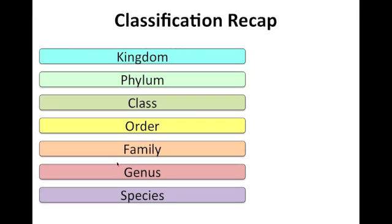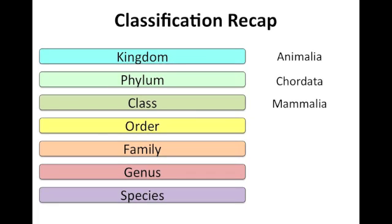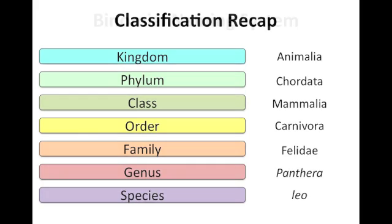Let's exemplify this classification system using an example. In this example, the organism is an animal, it has a backbone, it belongs to the mammal group, it's a carnivore, it's a type of cat, it belongs to a group of cats in the Panthera genus, and its species is Leo. This particular organism's common name is a lion.